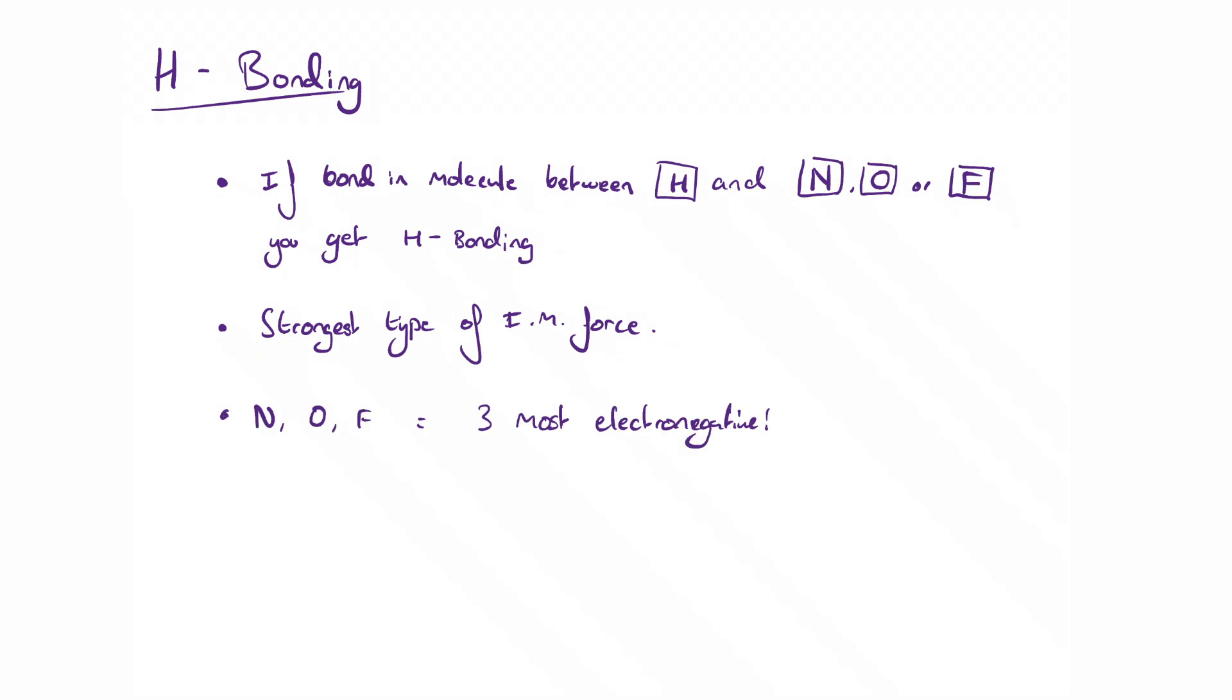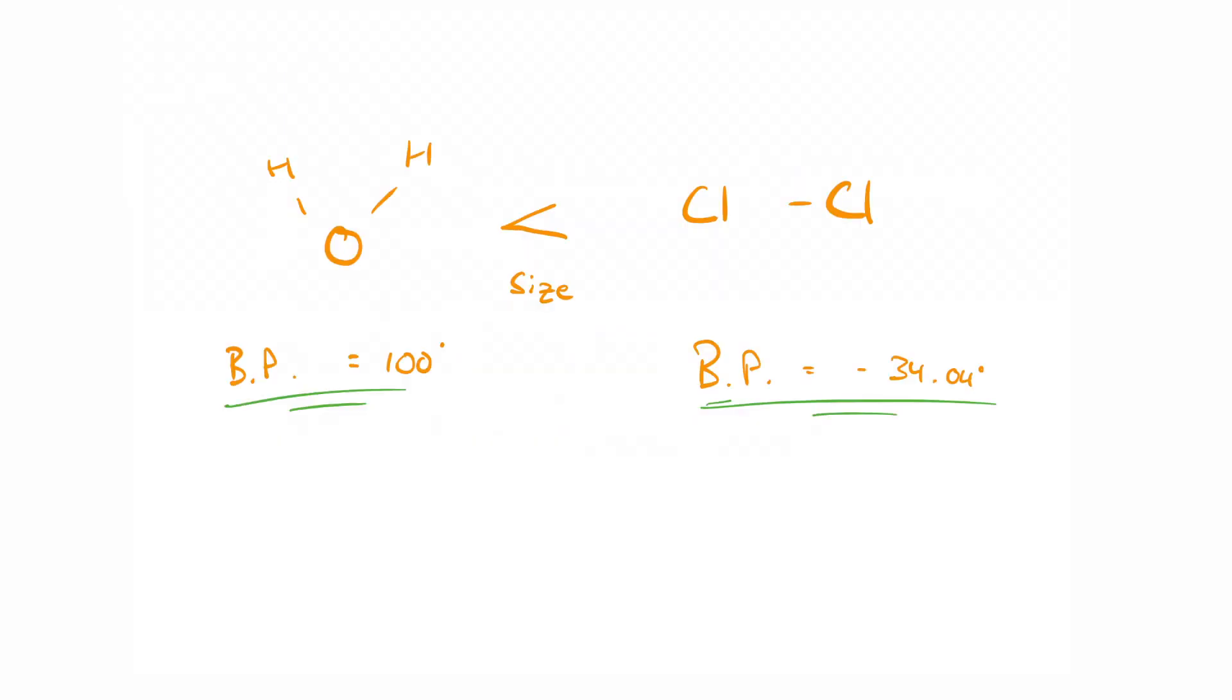Hopefully, you can deduce by yourself why this is the case now. Those three atoms are the three most electronegative atoms out there. And therefore, one end of a molecule will be extremely negative and the other will be extremely positive.